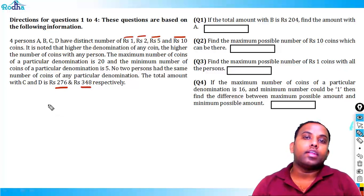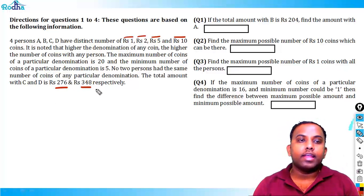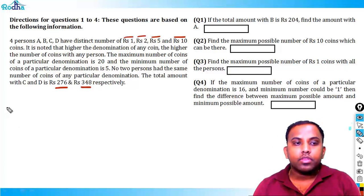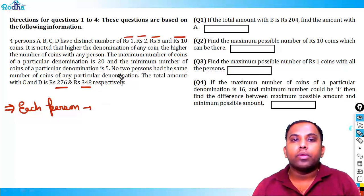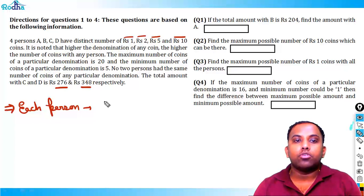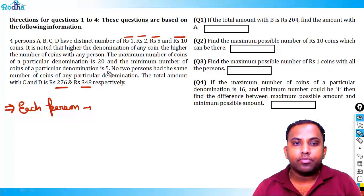This is a very good set requiring a lot of hidden trial. Each person has rupees 1, rupees 2, rupees 5, and rupees 10 coins — so each person holds four coin denominations. The minimum is 5 and the maximum is 20, giving a total of 16 numbers available from 5 to 20.